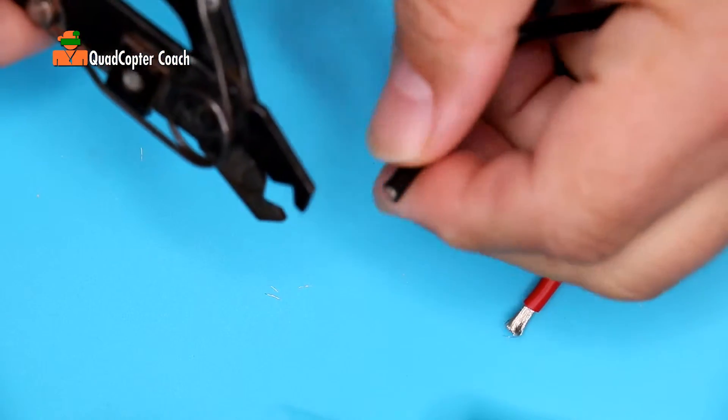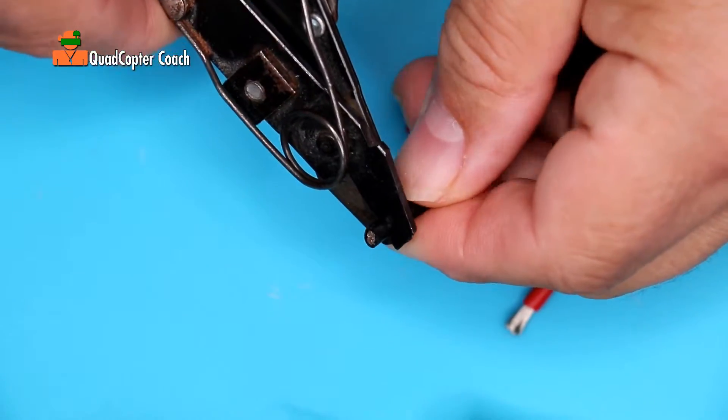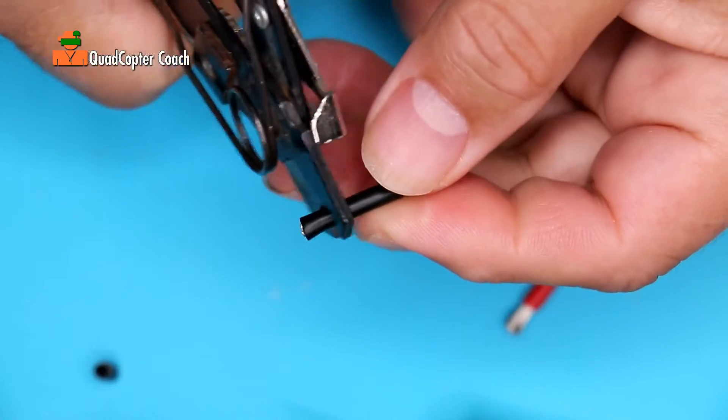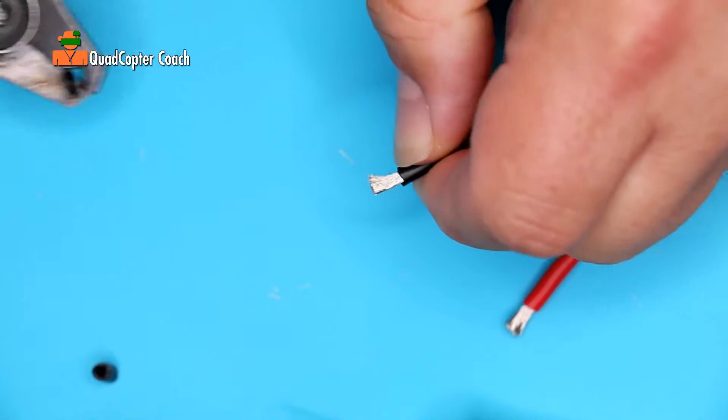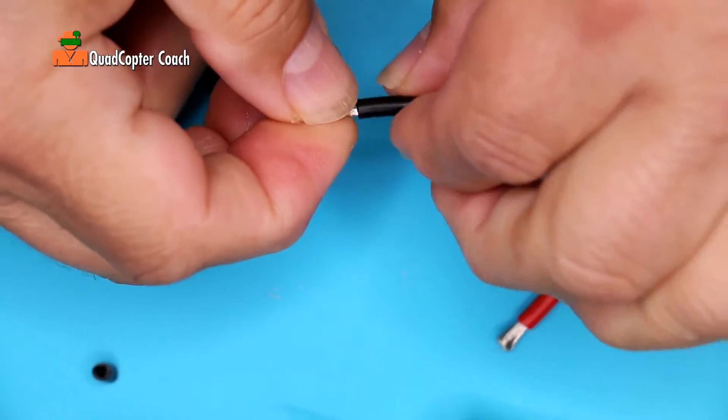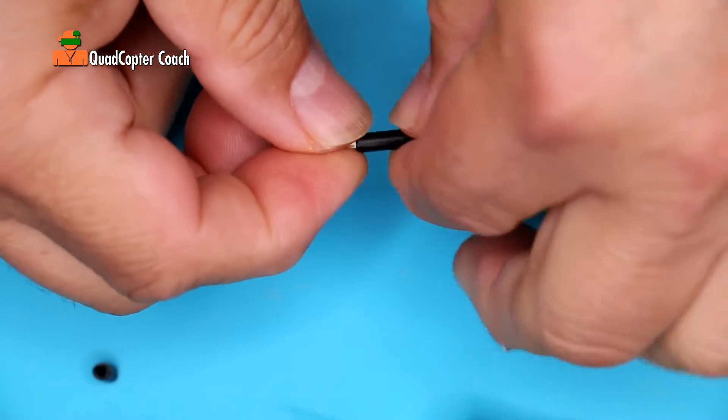Take the black wire and do the same. After you've done that, just give each wire a little twist with your fingertips.